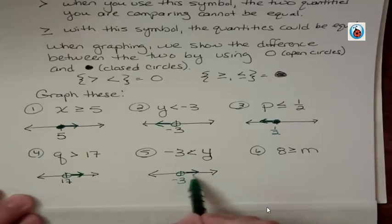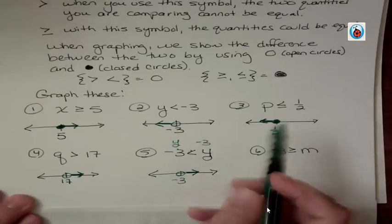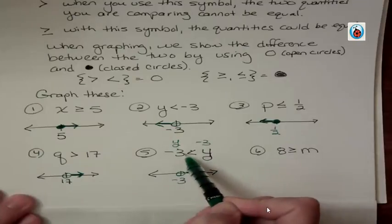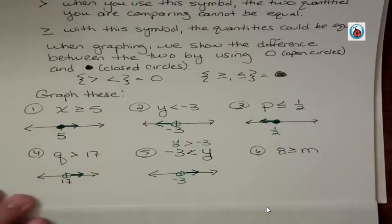You could flip-flop this around, and if you did, see how this is pointing at negative 3? It has to point at negative 3 down here. And so you can see, oh yeah, it's greater than when you write it that way.